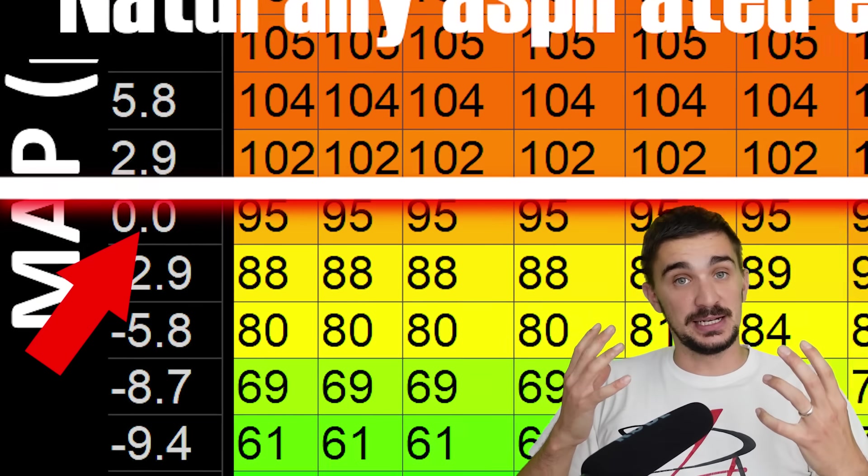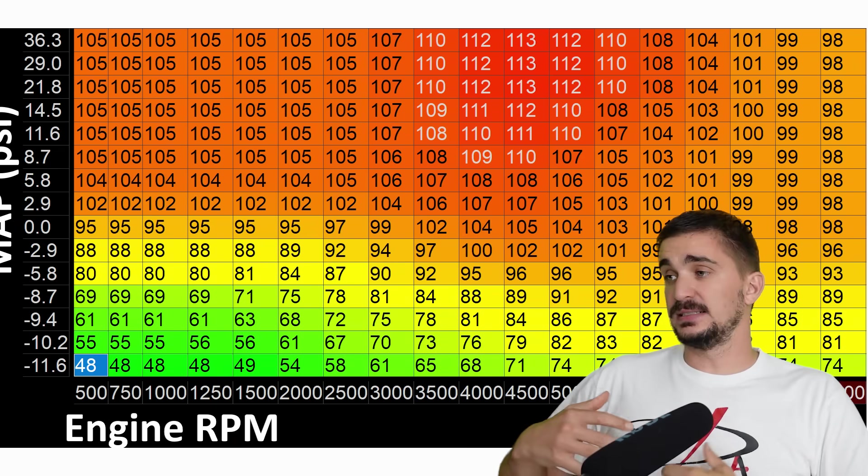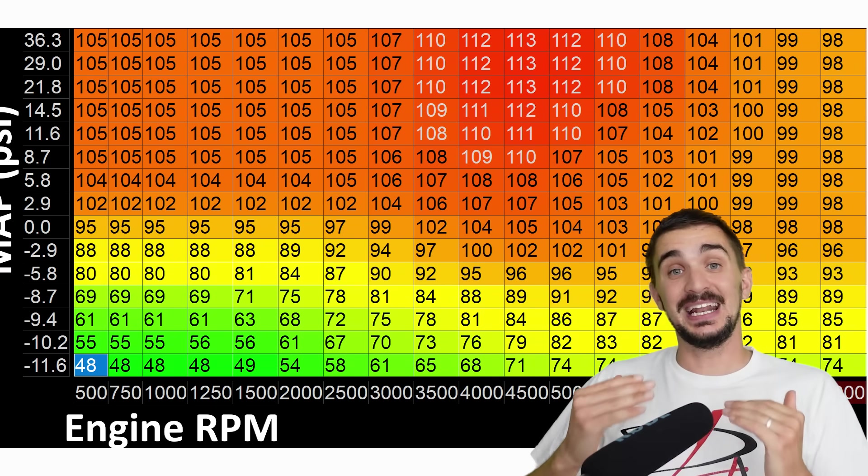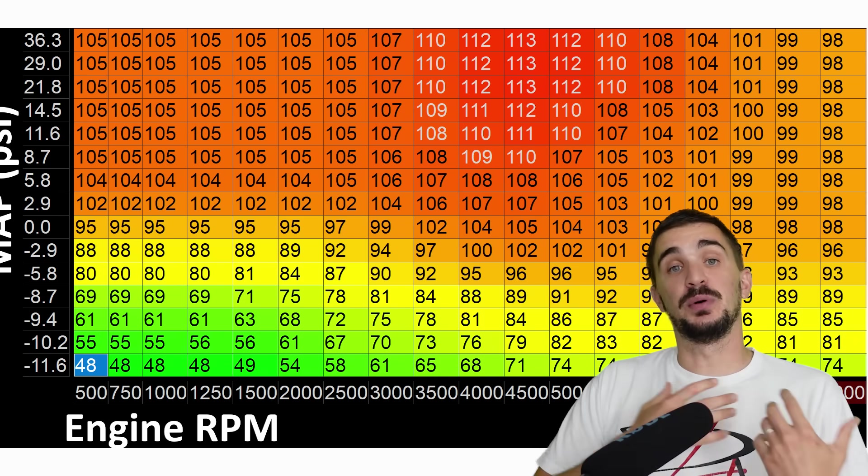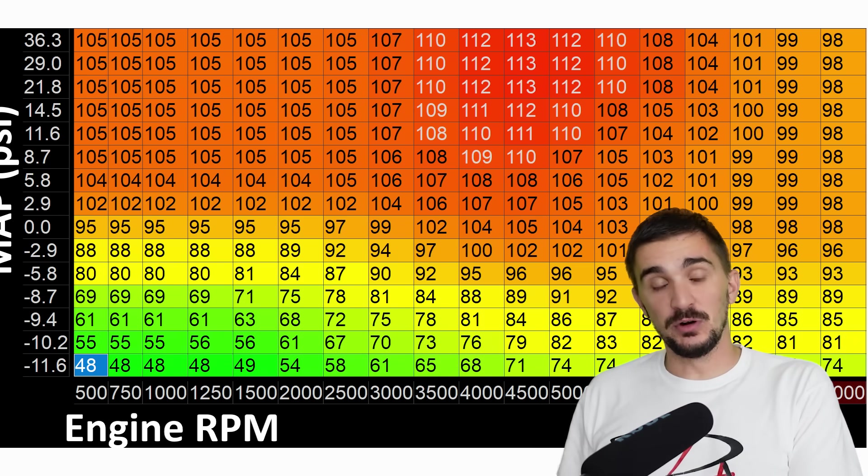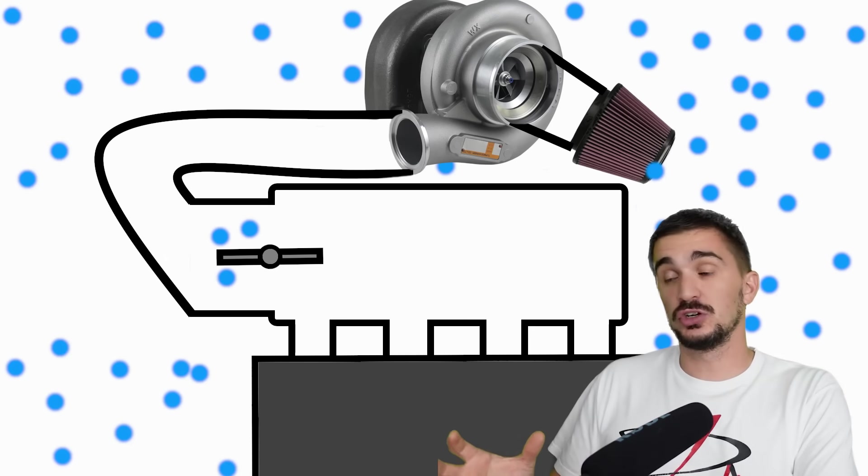Now, a boosted engine, an engine with a forced induction device, such as a turbo or a supercharger, can achieve significantly higher manifold air pressure than would be possible by relying on atmosphere alone. And that's because a turbo or a supercharger sucks in air, compresses it,